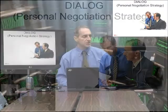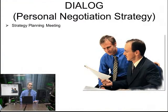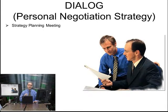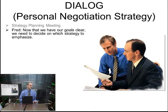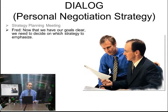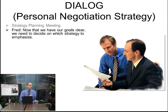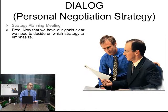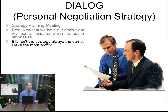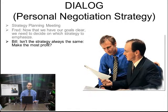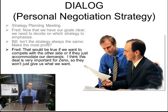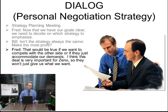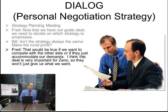Now let's look at a business context — a strategy planning meeting before a negotiation. Fred says that now that their goals are clear from unit two, they need to decide which strategy to emphasize. Bill asks: isn't the strategy always the same — make the most profit, get the lowest price, the best deal? Fred responds that would be true if they just want to compete, or if the other side simply accommodates their demands, but this deal is very important to Zeno, so they won't just give them what they want.